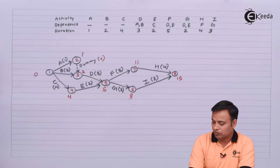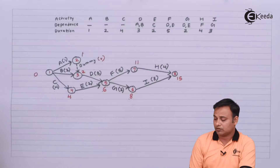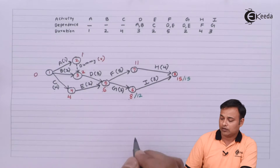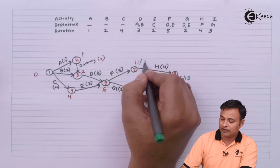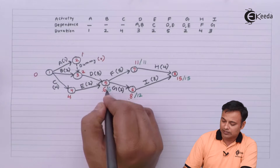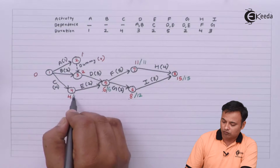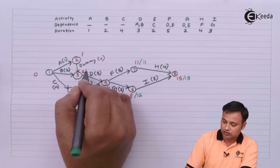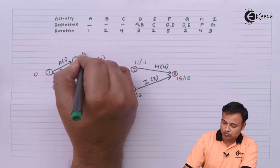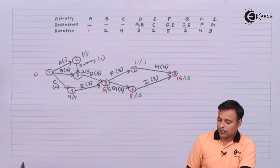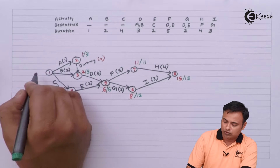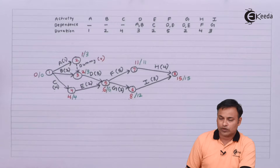Now we will go for the backward calculation, which is more tricky. The final node gets 15. Then 15 minus 3 = 12, and 15 minus 4 = 11. At node 5 it will be 11 minus 5 = 6, or 12 minus 2 = 10, whichever is less. Then 6 minus 2 = 4, and 6 minus 3 = 3. At node 2 it will be 3 minus 0 = 3, and at node 1 it will be 3 minus 1 = 2, or 3 minus 2 = 1, or 4 minus 4 = 0, whichever is less. So we are done with the backward and the forward calculations.